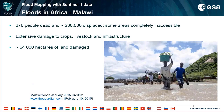The flood left 276 people dead and an estimated 230,000 displaced, with some areas completely inaccessible. It also caused extensive damage to crops, livestock, and infrastructure, with an estimated 64,000 hectares of land damaged, which further deepened the humanitarian disaster.